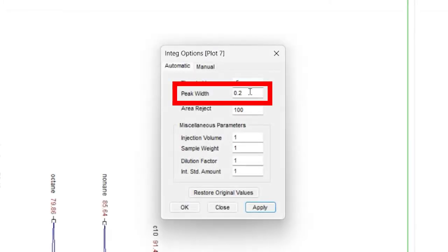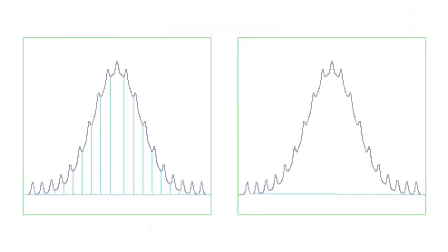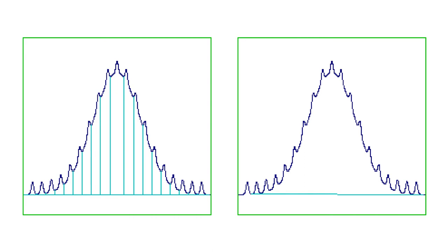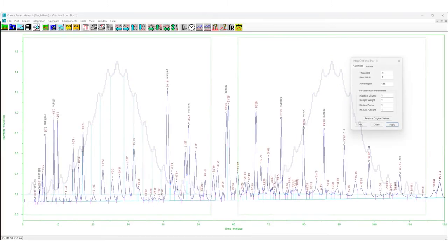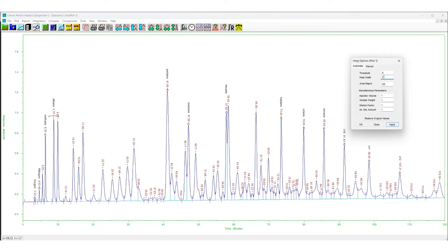The proper value for the Peak Width parameter is determined by the full width at half height of the narrowest peak in the chromatogram. The peak width is specified in minutes. The baselines in the figure correspond to peak width parameters of 0.03 and 0.60 minutes. Peaks that are less than half as wide as the peak width parameter will not be detected.